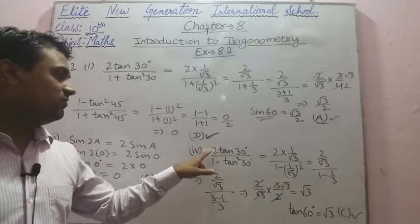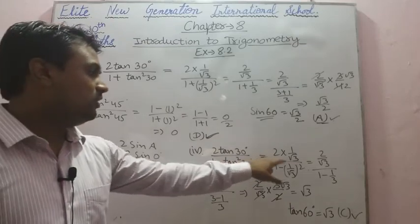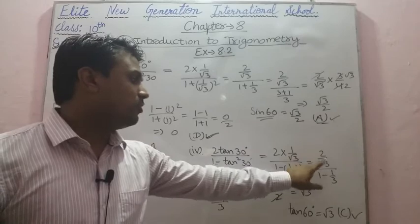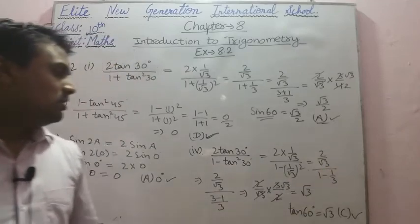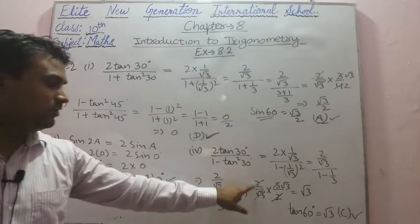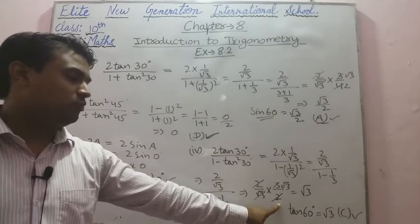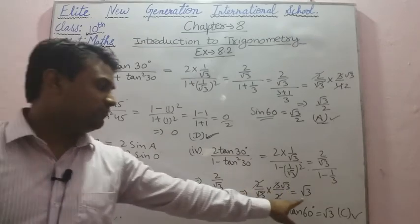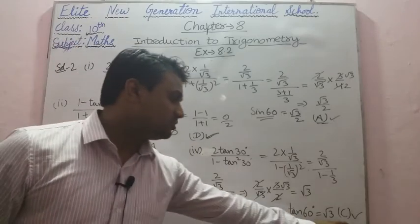Fourth part: 2tan30° / (1 − tan²30°). Putting the value: 2×(1/√3) / (1 − 1/3) = (2/√3) / (2/3) = (2/√3) × (3/2) = √3. Since tan 60° = √3, the answer is tan 60°, so option C is correct.